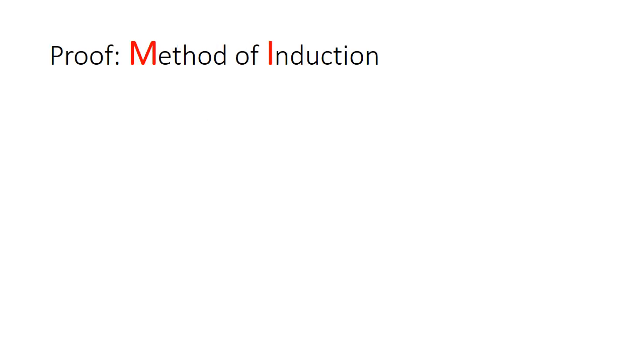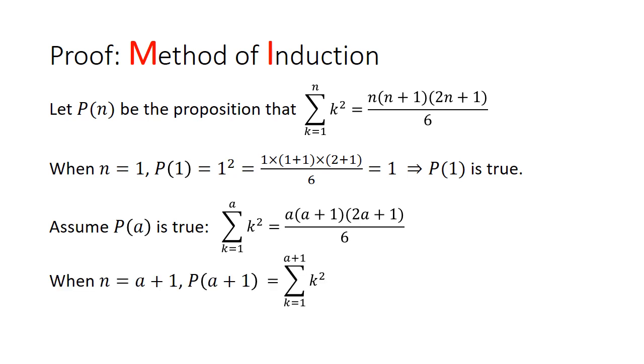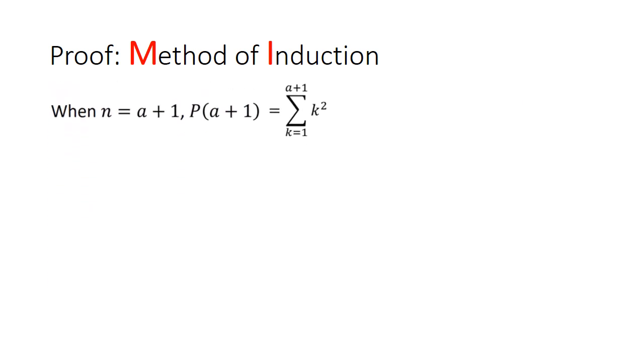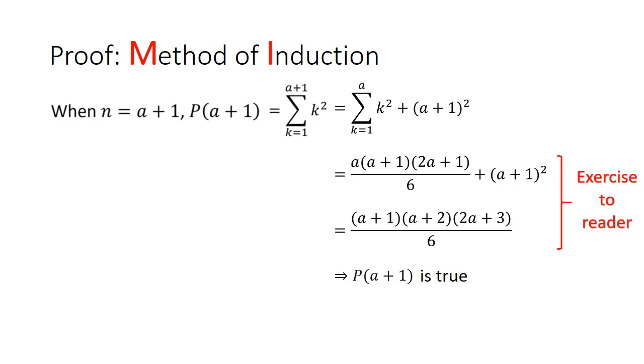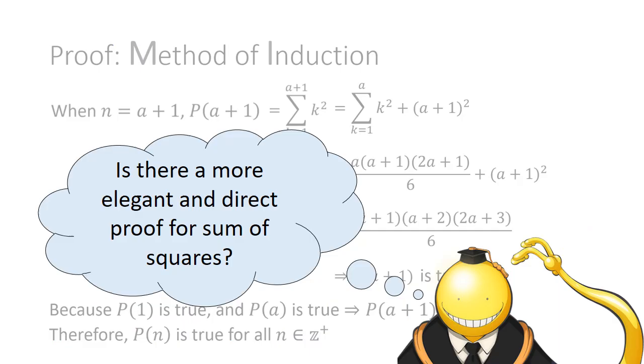The traditional proof is the method of induction. The basic idea is you let P_n be the proposition that you want to prove. Then you check for the case of n equals to 1. You then assume that the case n equals to a is also true. Then you try to prove for the case of n equals to a plus 1. After some algebraic manipulation, you can show that the case of n equals to a plus 1 is true. Since P_1 is true and P_a is true implies that P_(a+1) is true, we can conclude that P_n must be true for all n that are positive integers. But I'm not a big fan of induction. It feels rather tautological in nature to assume something is true in order to prove that it is true. While it works, is there a more elegant and direct proof?